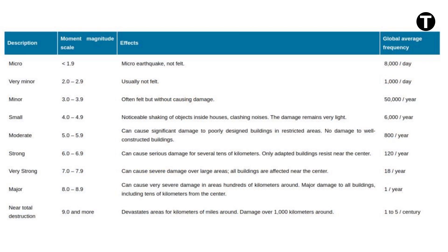Let's delve into the diverse realm of earthquake frequency and their consequential effects. As the Earth's restless crust constantly shifts, earthquakes come in a wide range of magnitudes, frequencies, and intensities. Micro-earthquakes, measuring less than 1.9 in magnitude, occur in abundance — around 8,000 of these tiny tremors happen each day, often going unnoticed by people. Very minor earthquakes, ranging from 2.0 to 2.9, occur at a rate of about 1,000 per day and are usually not felt.